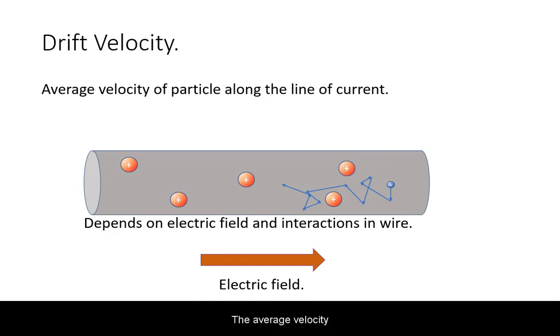The average velocity of the charge moving through the conductor is referred to as its drift velocity. This will depend both on the strength of the electric field as well as the number of interactions it encounters.